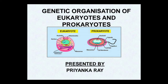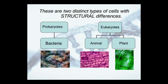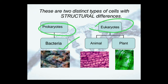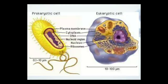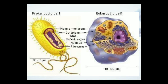Let's move into the topic. You can see here that these are two distinct types of cells with structural differences: the prokaryotic cell and the eukaryotic cell. Prokaryotic cells usually contain bacteria, whereas eukaryotic cells contain animals and plants. Here you can see the detailed structure of a prokaryotic cell and one eukaryotic cell, so let us discuss their composition one by one.